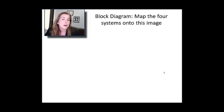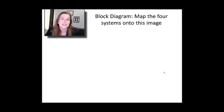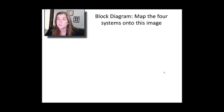I want you to try to block diagram a gas chromatography system based on what we've discussed — just sketch it out somewhere without going back. What are the primary components you remember? Injection, handling a bunch of gases, a column, the column sits in an oven, and then you have a detector. So kind of four things.